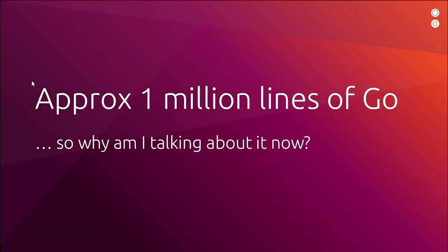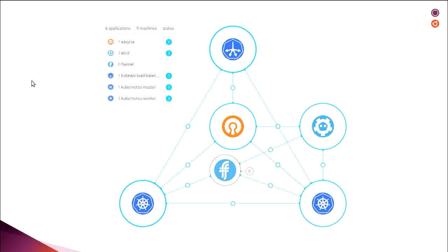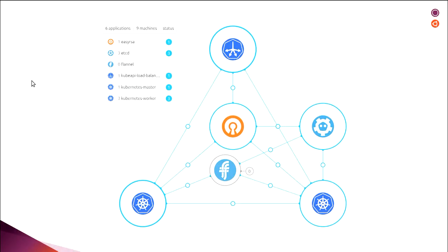Interestingly enough, it's about a million lines of Go, which might make you ask, why am I talking about it here? When you come back to these applications that are deployed, Juju is effectively the engine that drives the deployment. But all of these components — EZRSA, etcd, the Kubernetes master and workloads — they're all what we call charms. And we've learned the best programming language to write charms in is Python.